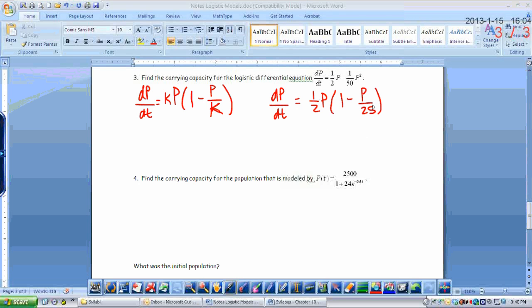So now that it's in this form, my carrying capacity is the number that's under p. So my carrying capacity is 25. But you just have to make sure that you've got in this parenthesis 1 minus p and then over a number, and that number is the carrying capacity.